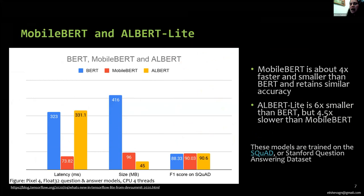Other examples are mobile BERT and ALBERT Lite. These are the optimized versions of the popular BERT model for natural language processing NLP tasks, including questions and answers, natural language inference, and others. Mobile BERT is about four times faster and smaller than BERT and retains similar accuracy. ALBERT Lite is six times smaller than BERT but four to five times slower than mobile BERT.